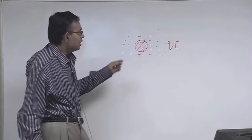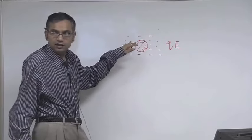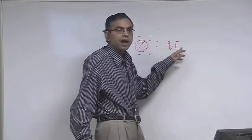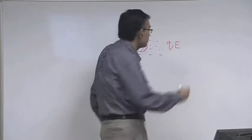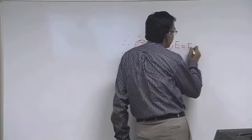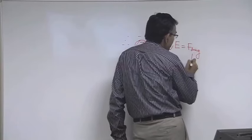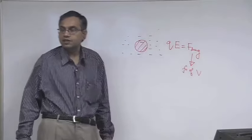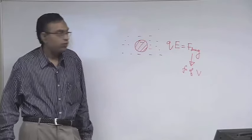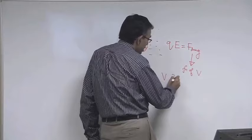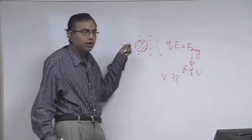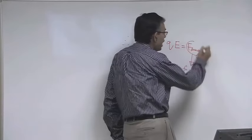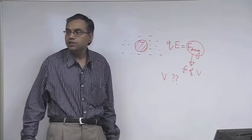Now, if the charged species is not accelerating, then this driving force must be balanced by the viscous drag force. This must equal F_drag, and this drag force is a function of the relative velocity between the fluid and the charged species. So, the velocity at which the charged species moves relative to the fluid is decided by what the drag force on that particular charged species is.